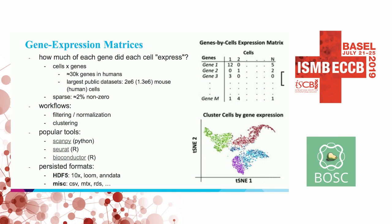The largest public dataset is like 2 million cells by 30,000 genes, so they're starting to be pretty large. If you want to do some of the standard processing on these, it gets unwieldy on large cloud instances — they still kind of take a long time. There's a lot of opportunity to speed up the analysis and scale it out to larger datasets. Most of the things people are doing with these are different kinds of filtering, normalization, or clustering to identify cell types.